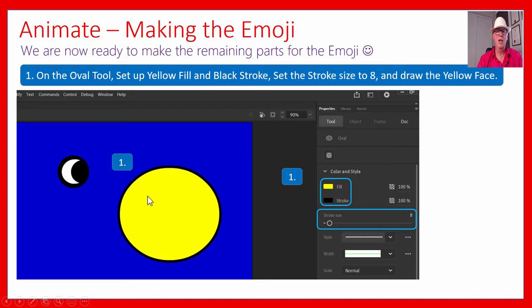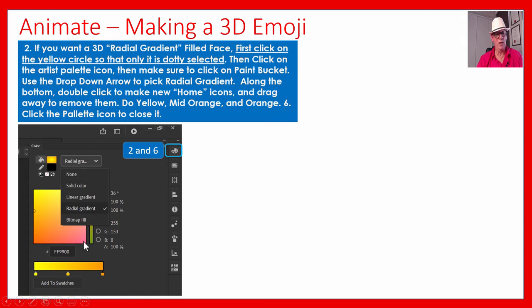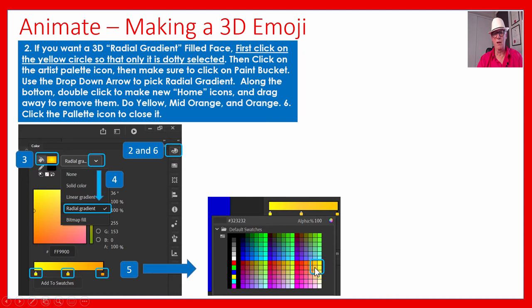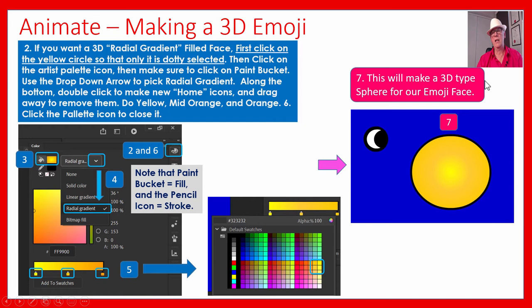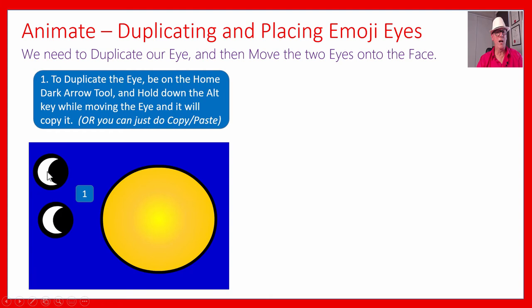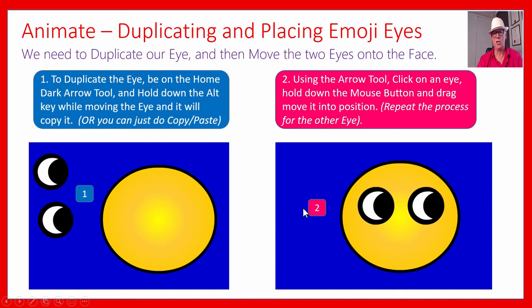We made our eye with fill and stroke. Remember we made the yellow face before. If you want the radial gradient, click on the paint bucket, click that down arrow, do Radial Gradient, set up the three different colors - bright yellow, medium orange, and dark orange. The paint bucket is the fill. So that's our 3D emoji all set up, and you can just move the eyes across. Hold down the ALT key to make a second eye, or do a normal copy and paste. We've got our two eyes on the emoji. We've got a face and some eyes made using the cookie cutter.